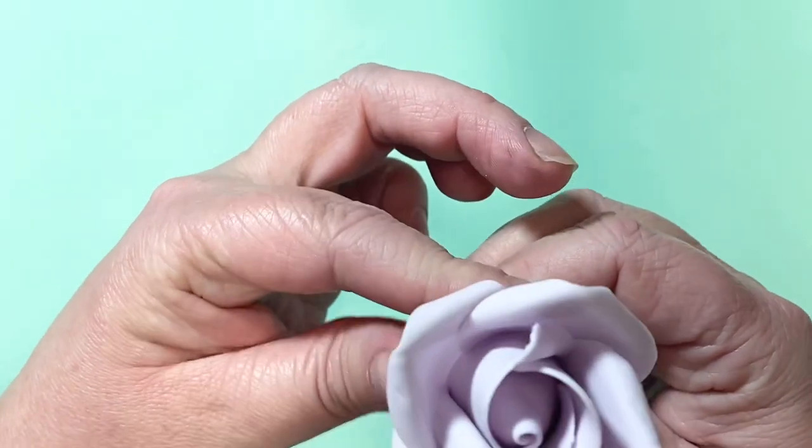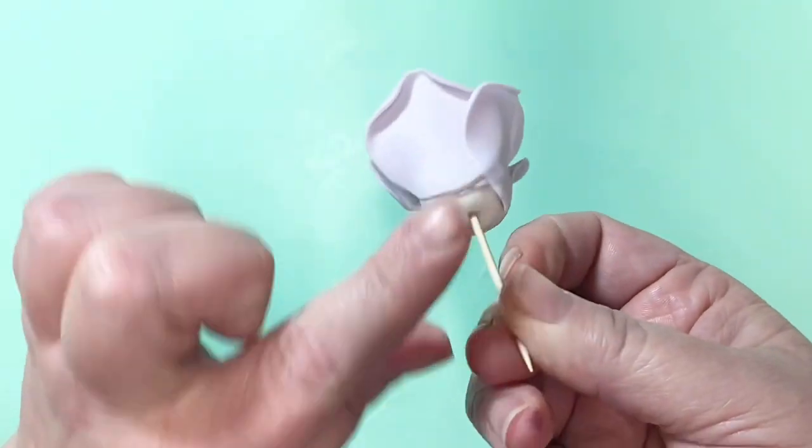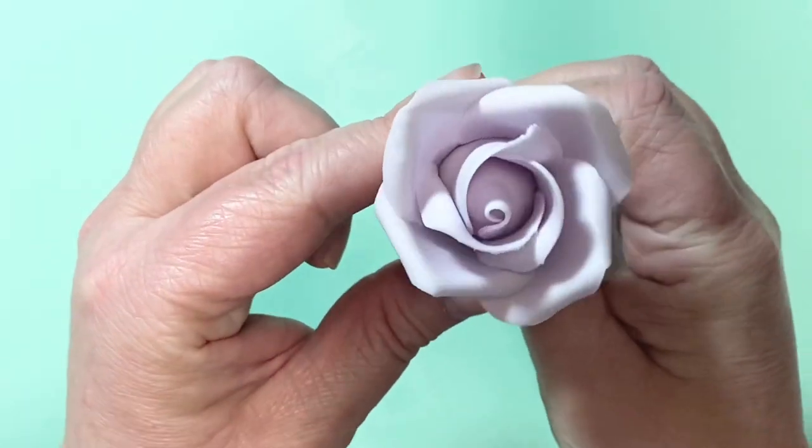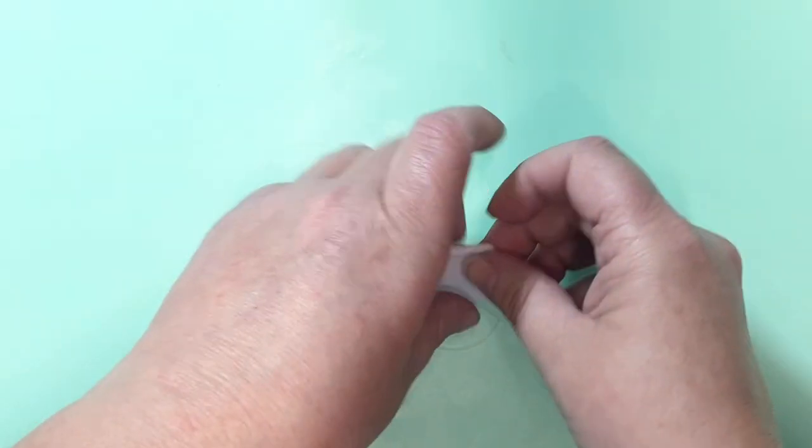And tuck it in nicely and close it. And again, neaten up the base of your rose so that it's not sticking out and it's all flush against the bud. You can turn it over, and this is why it's good to have the bud dry. You can put it upside down and work with it upside down and make sure it's properly stuck.